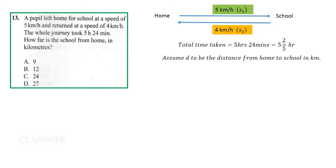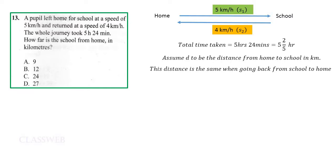Now let us assume d to be the distance from home to school in kilometers. This distance is the same when going back from school to home. We need to remember that speed equals distance covered over time taken, which means time t equals d over s.